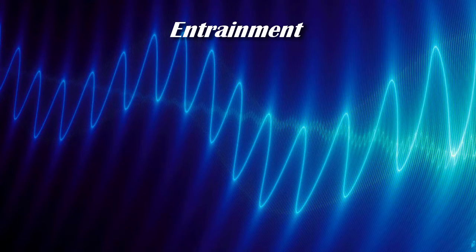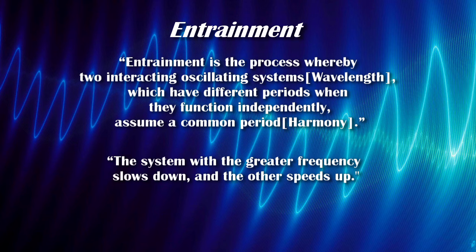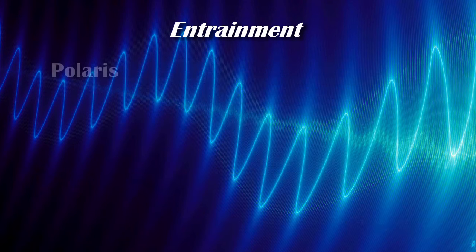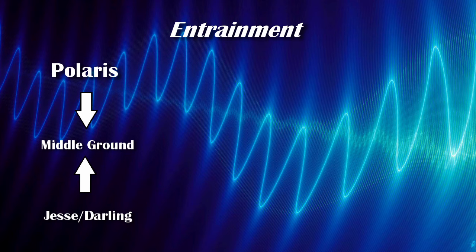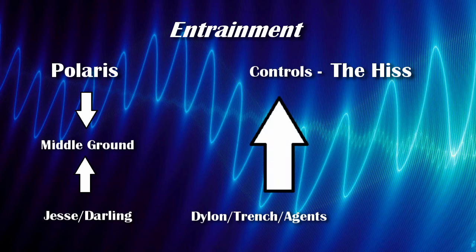To quote from an article on Schumann resonances and their effect on human bioregulation: 'Entrainment is the process whereby two interacting oscillating systems, which have different periods when they function independently, assume a common period. The system with a greater frequency slows down and the other speeds up.' In other words, one vibrational frequency can tune the other — train it — into harmony. This is shown in Control when Polaris goes through the entrainment process with Jesse and Dr. Darling, while the Hiss does the same with Trench and Dylan. Polaris tunes itself down to safely tune up the Director and head of research, giving them an enhanced perspective of reality. The Hiss's entrainment process is more violent — it does not tune itself down but forces everything to its level, leading to madness or destruction of the psyche, making those corrupted by the Hiss mere puppets, part of the collective.